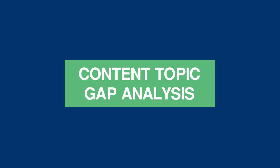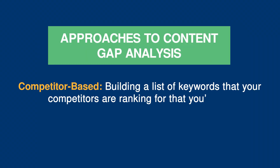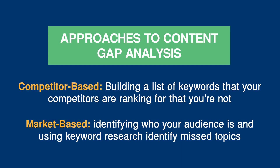The first type of gap analysis should be performed when you're looking to create new content. The idea is to identify gaps in your existing content so that you can plug these gaps with quality, well-researched content. There are two approaches to content topic gap analysis in SEO: competitor-based and market-based. Competitor-based content gap analysis involves building a list of keywords that your competitors are ranking for that you are not. Market-based analysis is about getting a crystal clear idea of who your audience is, as well as their needs and desires, then using keyword research to find which topics and questions are not answered in your article, page, or resource.